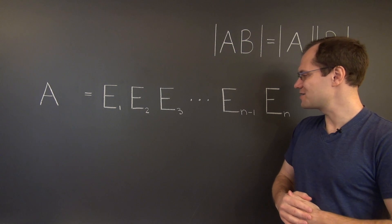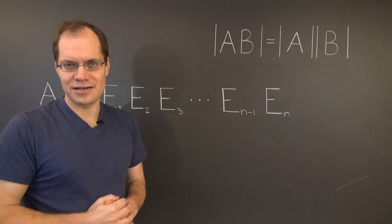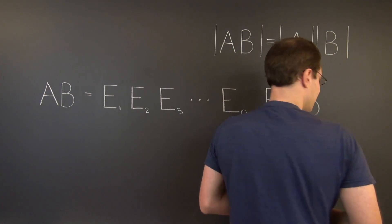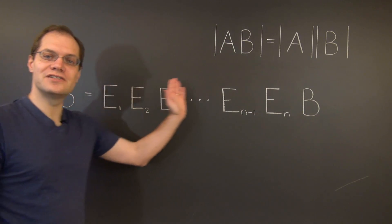And if A is this product of elementary matrices, then AB is the following product. And then the determinant of AB equals the determinant of this long product.